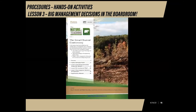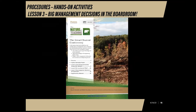I'm Emily Evers, the agriculture and natural resources intern in St. Joseph County with Purdue Extension. Today I will be talking about the activity for lesson three called Big Management Decisions in the Boardroom of the Great Clearcut Controversy Unit. After completing lessons one and two, students participate in a mock boardroom activity, learning how to work together to create the best management plan for a forest. Start by reviewing lessons one and two and answering any remaining questions. Then ask the students if they know what a boardroom is and what happens there. Discuss that boardroom meetings happen when important business decisions need to be made, several companies work together to reach their goals, and they all must compromise to create the best plan. You can relate this back to forests and ecosystems, and then the activity can start.